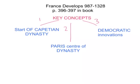Hello and welcome to the tutorial on France's development between 987 and 1328. This mirrors the development in England, covering more or less the same time period as the previous video which explained how democratic processes emerged in England. The main concepts you need to understand are the Capetian dynasty, Paris becoming the centre of this dynasty, and the democratic innovations that arise during this period. You can find the information on pages 296-297 of your book.